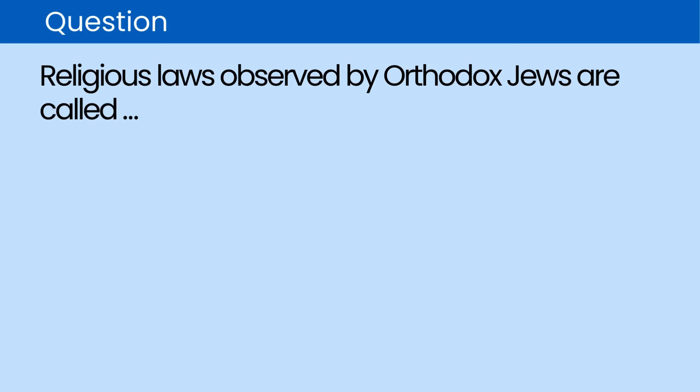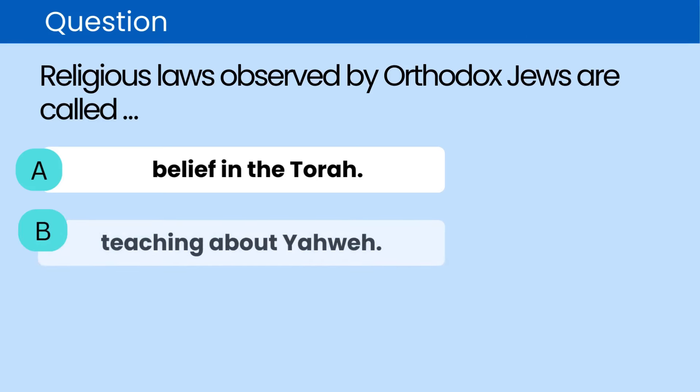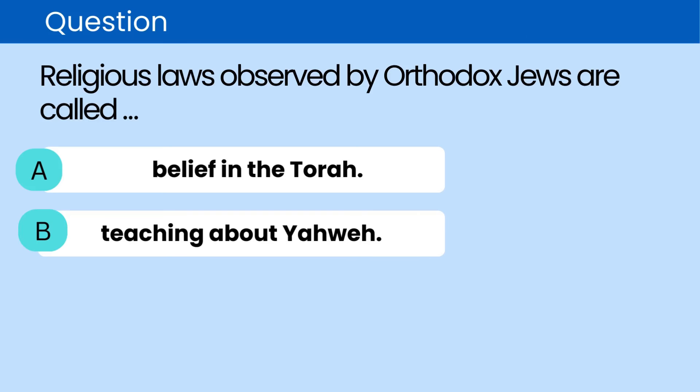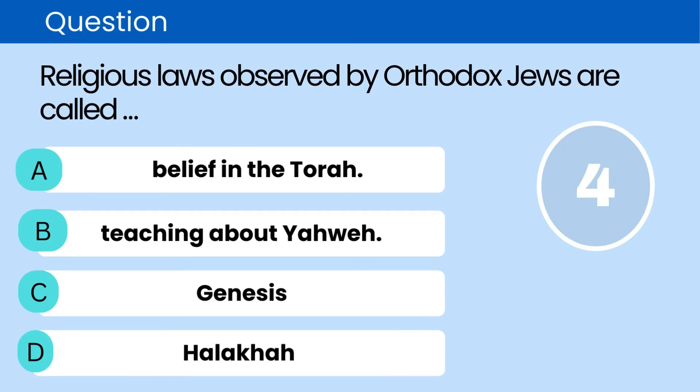Question: Religious laws observed by Orthodox Jews are called. A. Belief in the Torah. B. Teaching about Yahweh. C. Genesis. D. Halakha. The correct answer is D. Halakha.